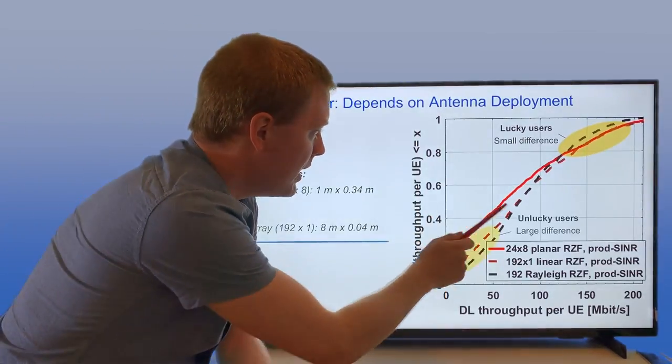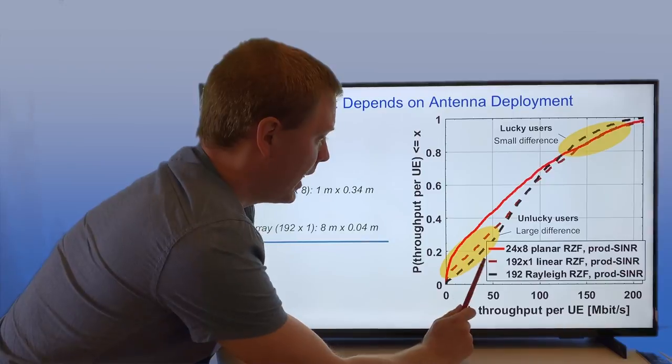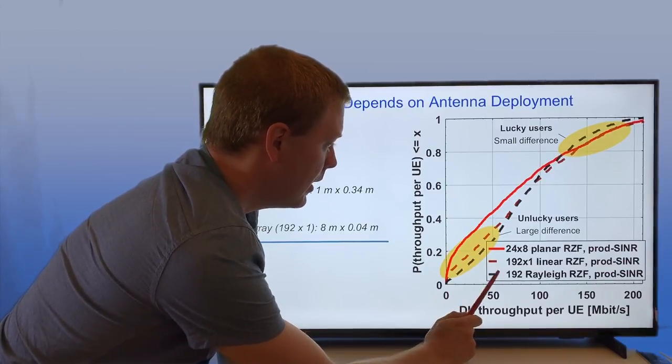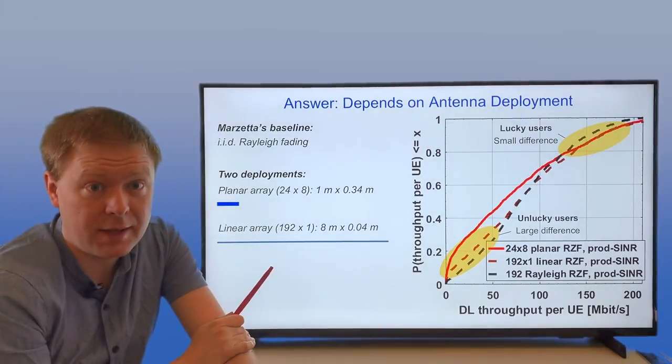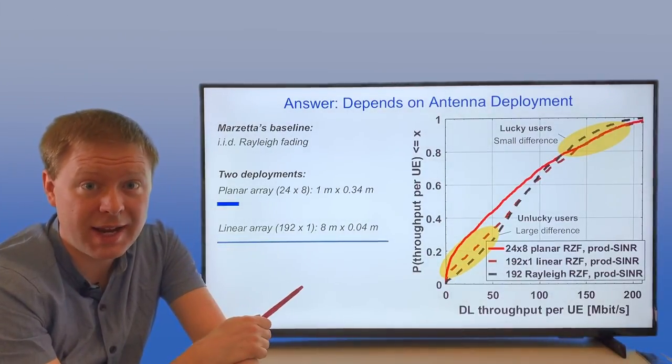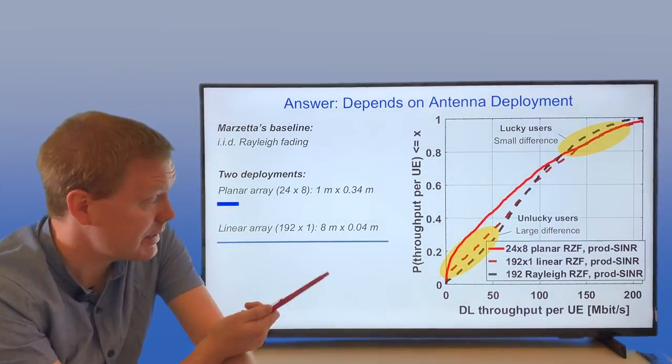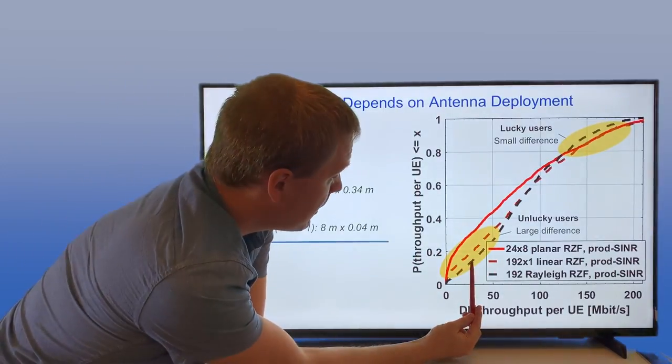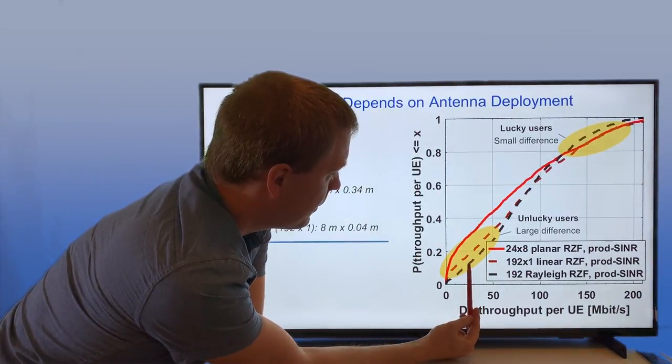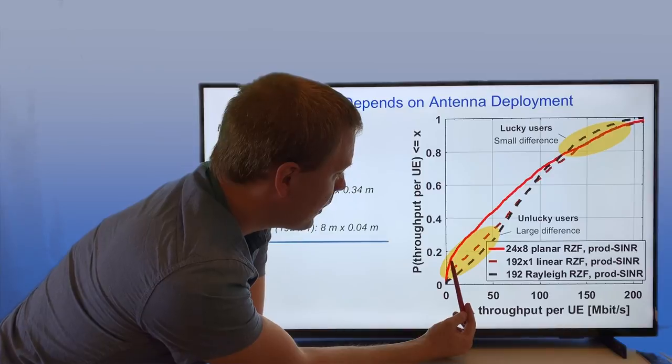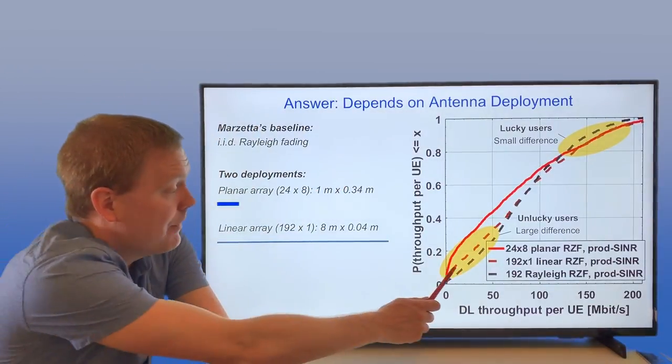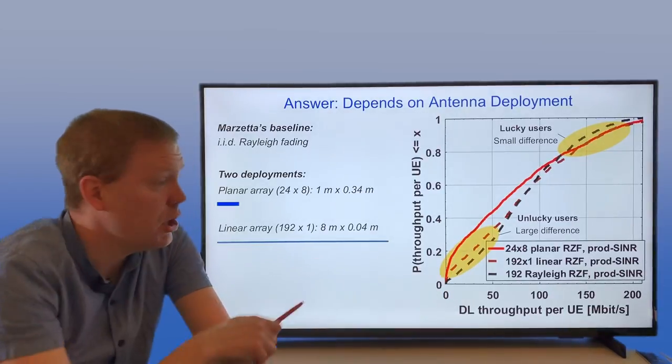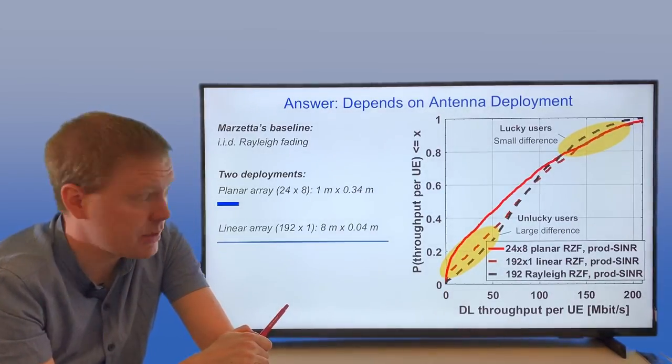But if you're down here, for unlucky users, there is a large gap. The best thing here is to use the Rayleigh fading method from Marzetta. But reality won't contain IID Rayleigh fading in most cases. If you have a uniform linear array, you're not that far off. But if you have a more planar array, which is more similar to what is actually being deployed in reality, you have a large performance loss. So you have much lower performance for the weakest users.